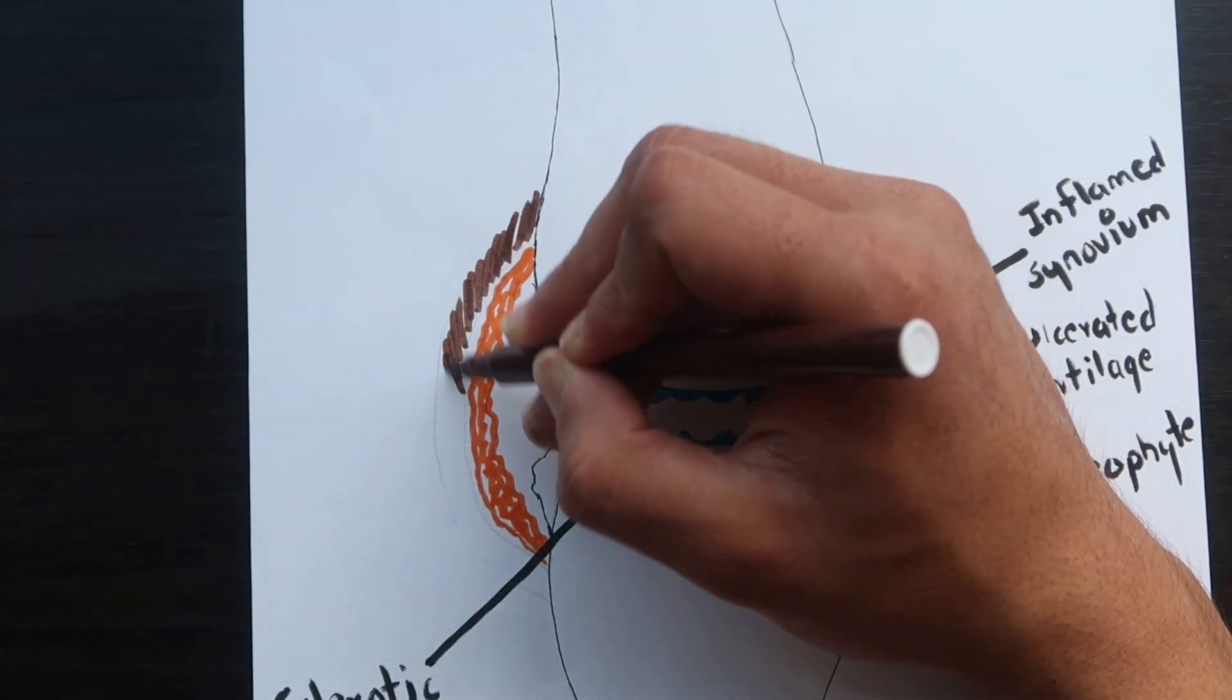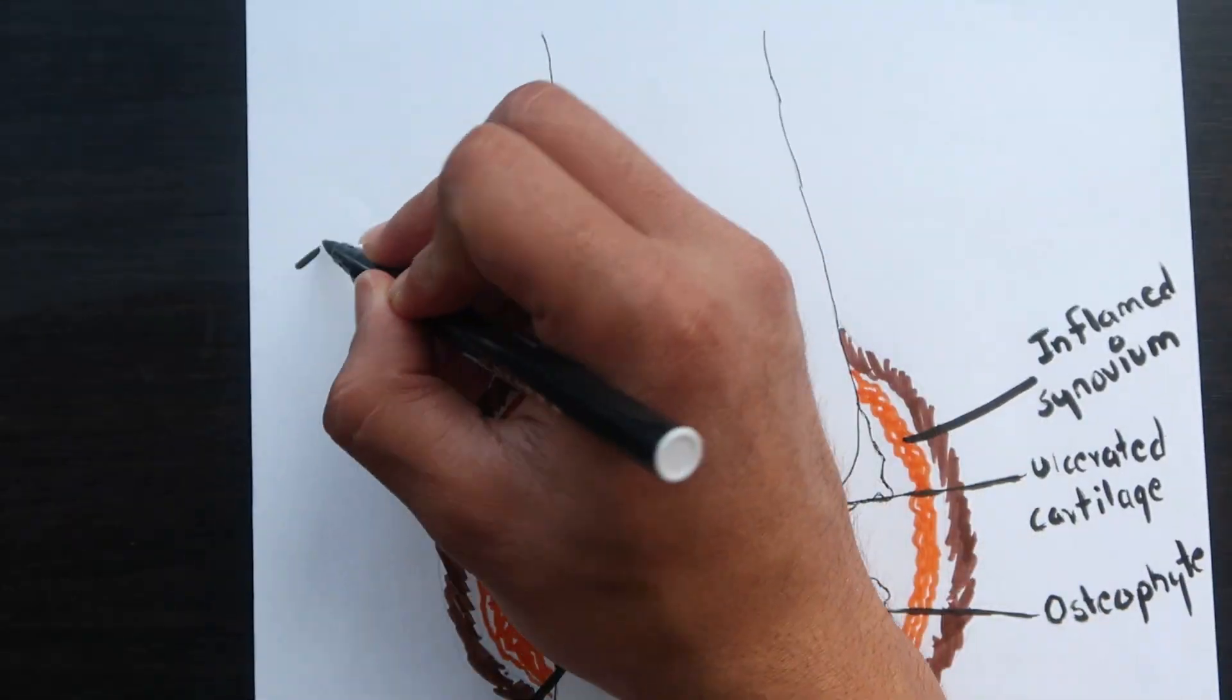The outer capsule also thickens and contracts, and there is narrowing of the joint space.